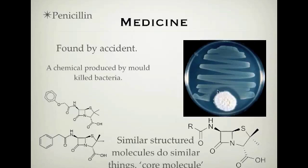He started to analyse the mould that had started growing there by chance and tried to work out what the chemical or molecule was that was stopping the growth of the bacteria causing infections. What he found was a molecule, and he called that molecule penicillin. He found that penicillin could kill the Staphylococcus bacteria, which was causing a lot of bad infections in people.